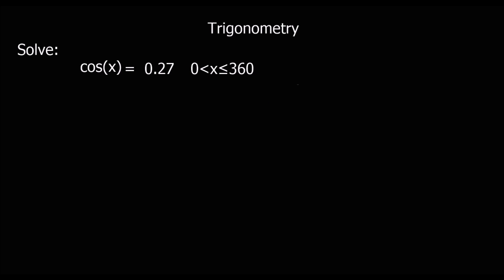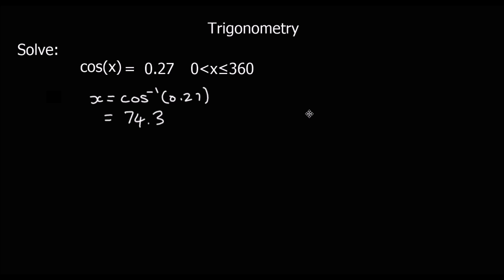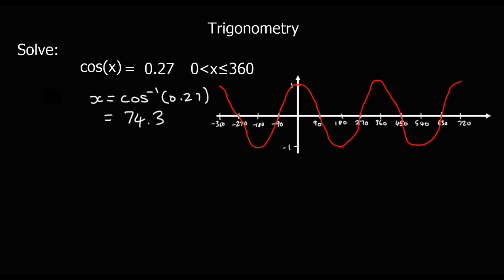Now let's look at a cos question. The first step is the same — we type into the calculator shift cos 0.27, and that gives us the first answer: 74.3 degrees.